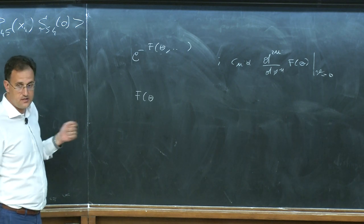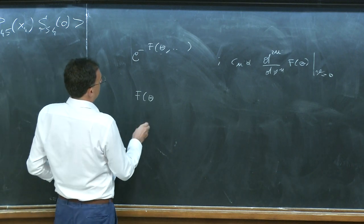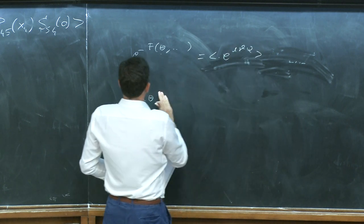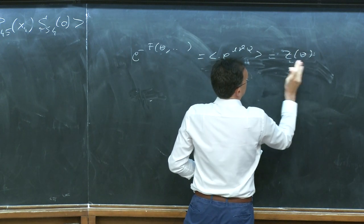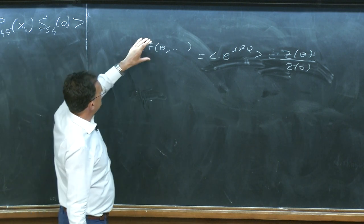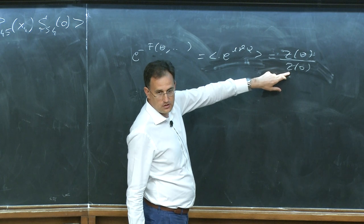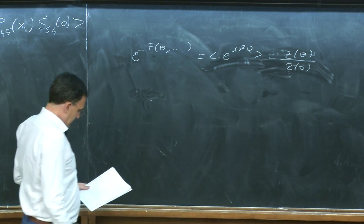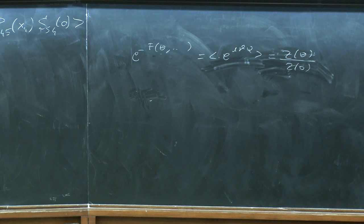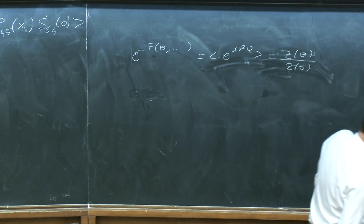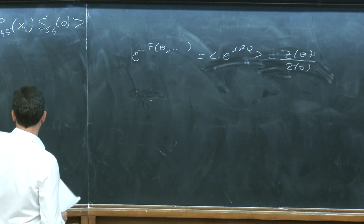One can prove exactly that all these cumulants are finite. So all the cumulants of the topological charge are finite. This means that F(θ) — the free energy in QCD — the quartic divergence, the cosmological constant, is θ-independent. We define F(θ) as a ratio of two partition functions: one with θ≠0 and one with θ=0, so the divergence is normalized away.